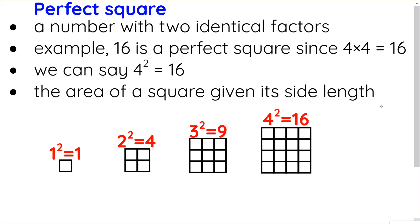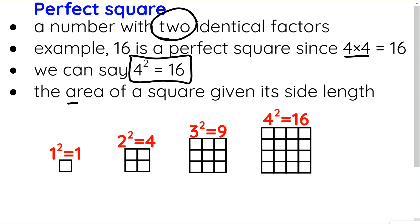So let's talk about perfect squares. Perfect squares are any number with two identical factors. For example, 16 is a perfect square because 4 times 4 — there's your two identical factors — equals 16. So we can say that 4 squared equals 16. Pictorially, a perfect square is the area of a square given its side length. For example, if the side length is 3, then 3 times 3 is 9, so 3 squared is 9.